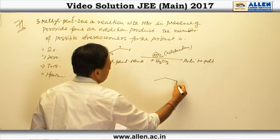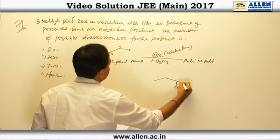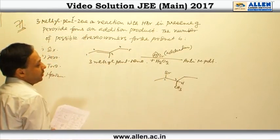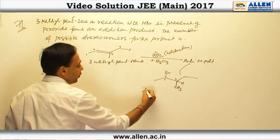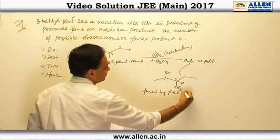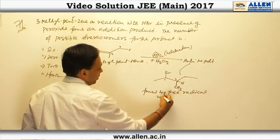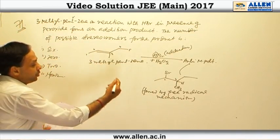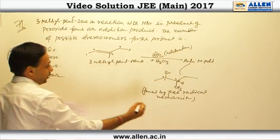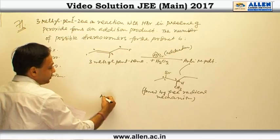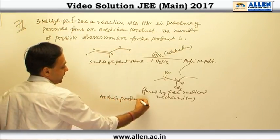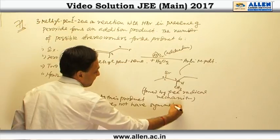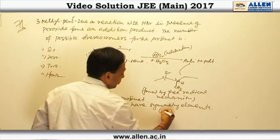So the product is CH3, H, and Br will be attached to carbon number 2. This is the anti-Markovnikov product, formed by free radical mechanism. Regarding the stereochemistry of the product, this compound has 2 chiral centers, and as this product does not have any symmetry elements, we can say it is non-symmetrical.